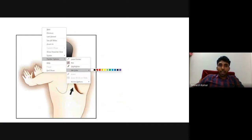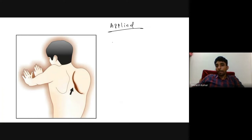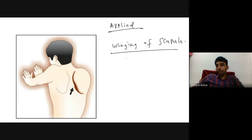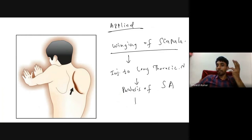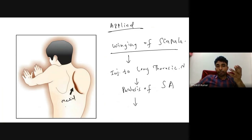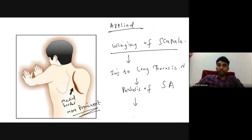The applied aspect of the scapula is winging of the scapula. It is due to injury to the long thoracic nerve, which supplies the serratus anterior muscle. Paralysis of serratus anterior causes the medial border of the scapula to become more prominent — this prominence of the medial border is called winging of the scapula.